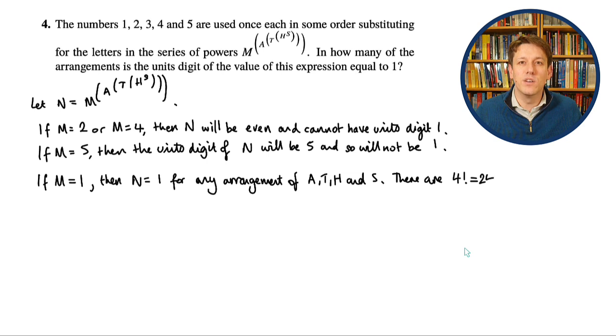4 times 3 times 2 times 1, which is 24. There's 4 choices for a, and then 3 choices left for t, 2 choices left for h, and then s is fixed. So we've got 24 ways where m is equal to 1 that this problem can be solved.